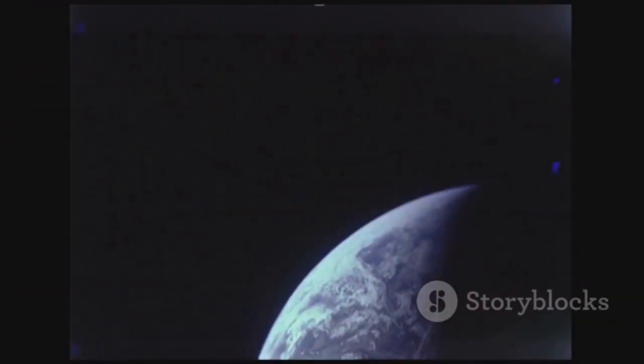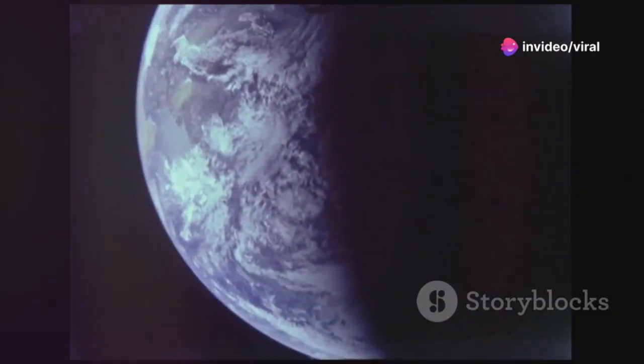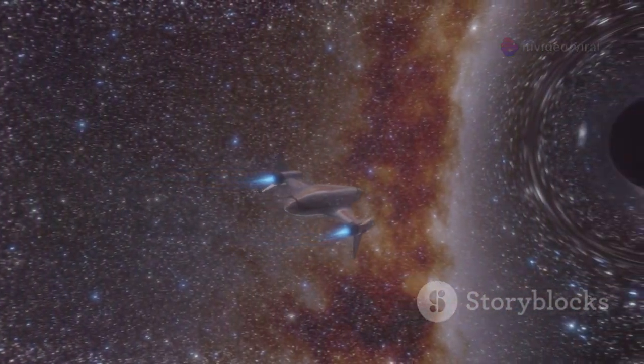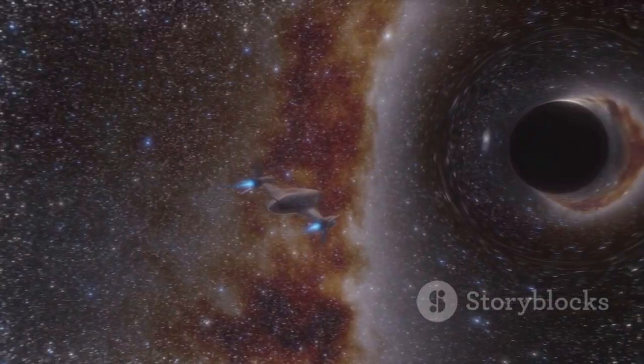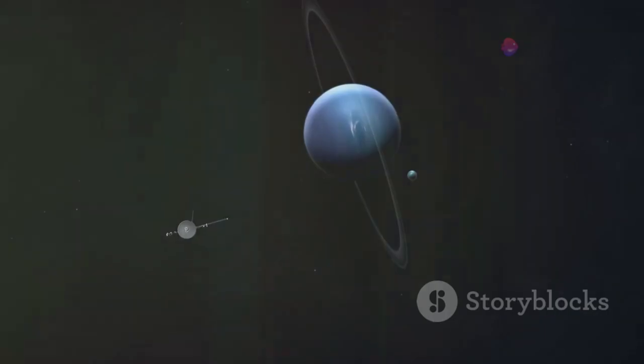Voyager 1 hurtles through the endless void, leaving the sun behind at a staggering 17 kilometers per second. With every tick of the clock, it drifts farther from Earth, navigating a cosmic expanse where the closest star lies trillions of kilometers away.